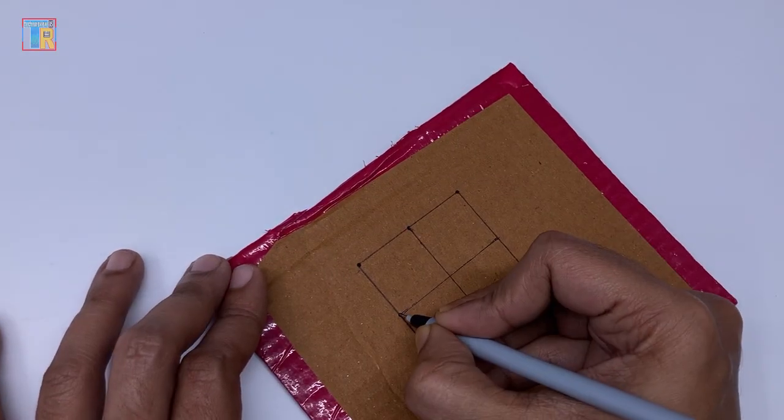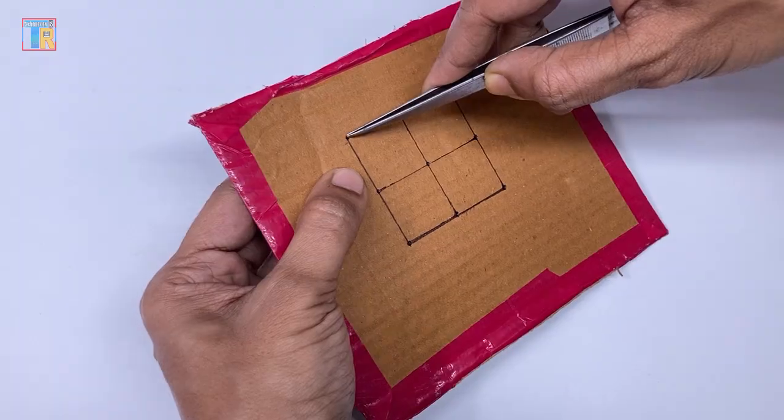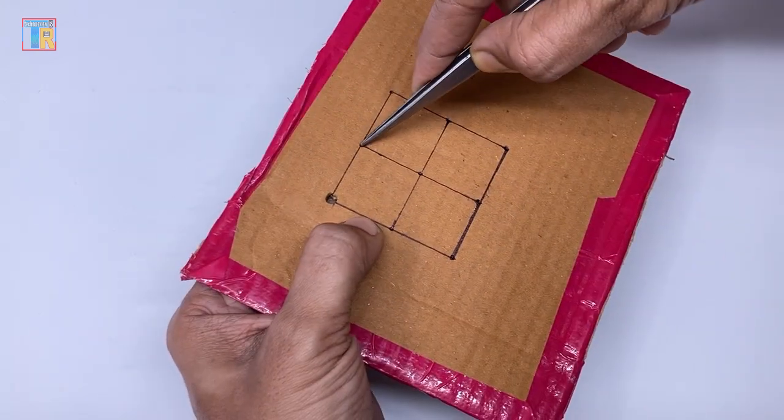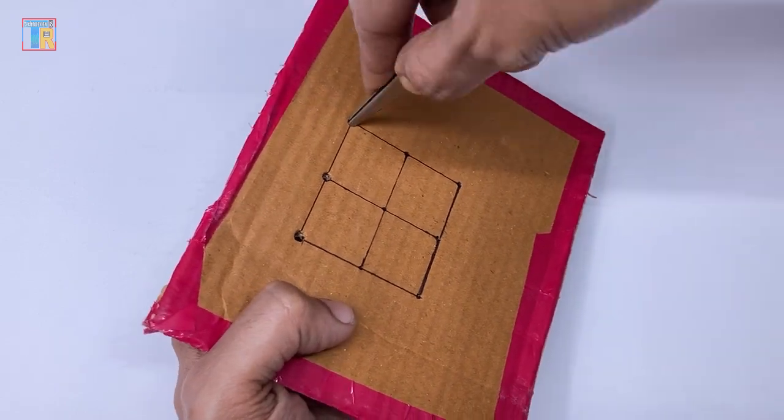Now mark all corners of the drawn box. Make some holes using tweezers but don't make them too big. Keep in mind we are making these holes for 5mm LEDs.